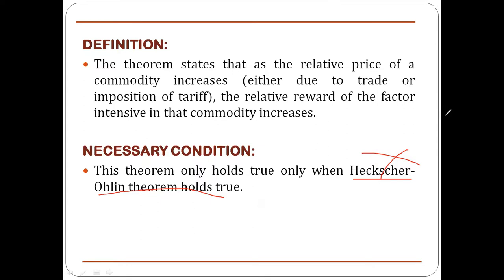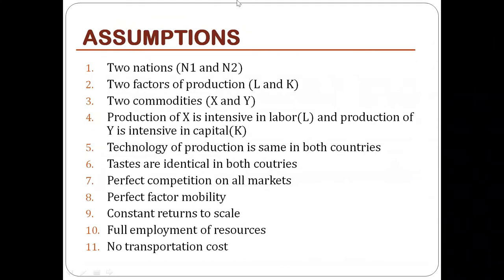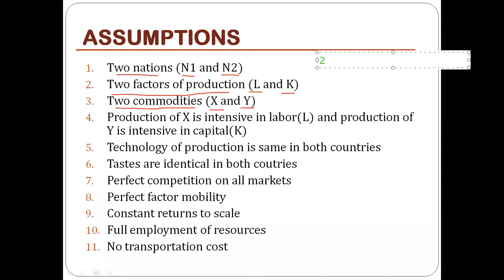We will now discuss the assumptions underlying the Stolper-Samuelson theorem. First, there are two nations — nation one and nation two. There are two factors of production — labor and capital — and two commodities, X and Y. This is basically a two-by-two-by-two model: two nations, two factors of production, and two commodities.